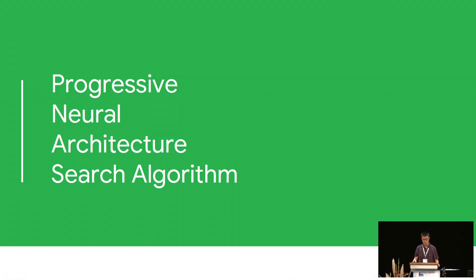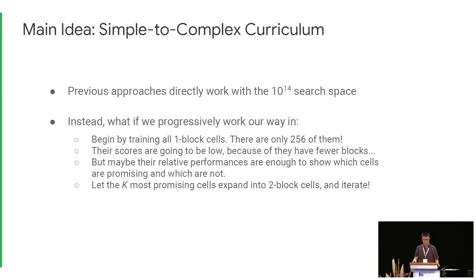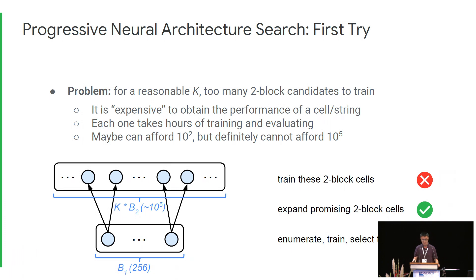This brings us to our Progressive Neural Architecture Search algorithm, or PNAS for short. We notice that previous approaches all worked directly with the 10 to the 14th final search space. This is a huge space to navigate through, and signal accumulation can be noisy and slow, especially at the beginning. Our main idea is to use a simple-to-complex curriculum and progressively work our way into this big final search space. More specifically, we begin by training all one-block cells — there are only 256 of them, which we can afford to enumerate. Their validation scores will be low because they have fewer blocks and less representation power, but their relative performances may be enough to show which cells are promising. We let the K most promising cells expand into two-block cells and then iterate. Although this vanilla algorithm captures the main idea, it is not yet practical.